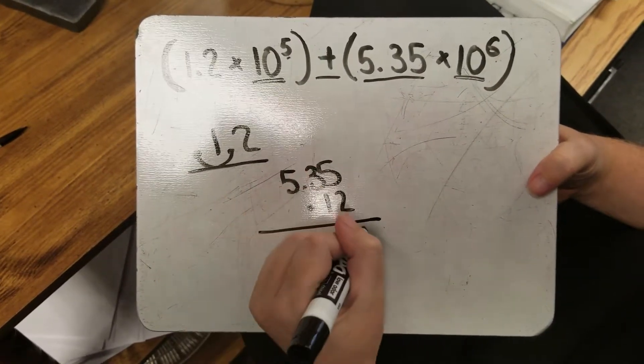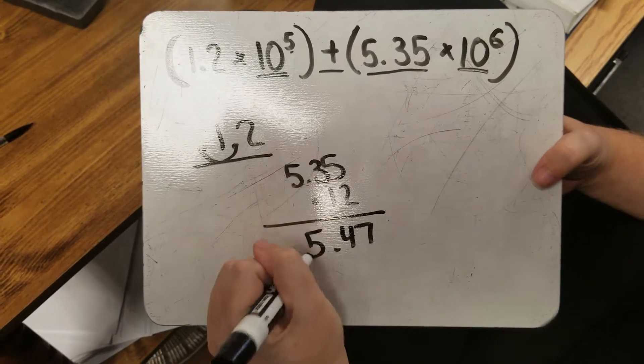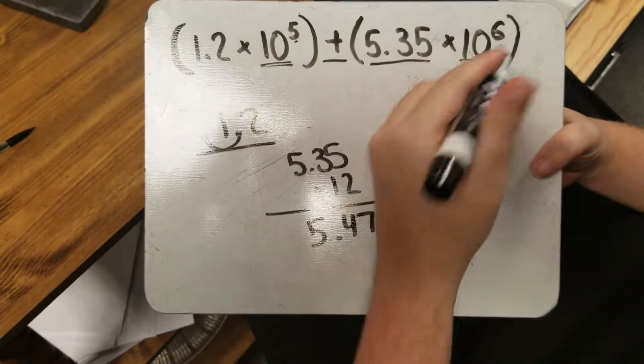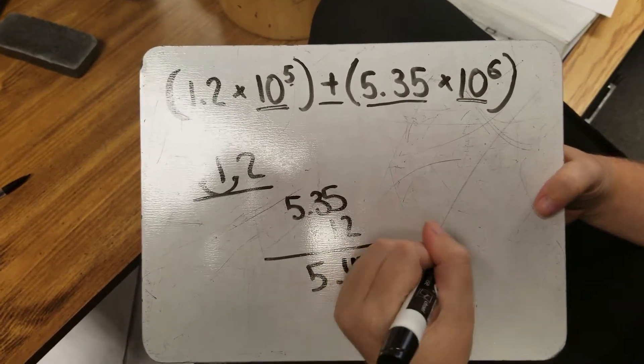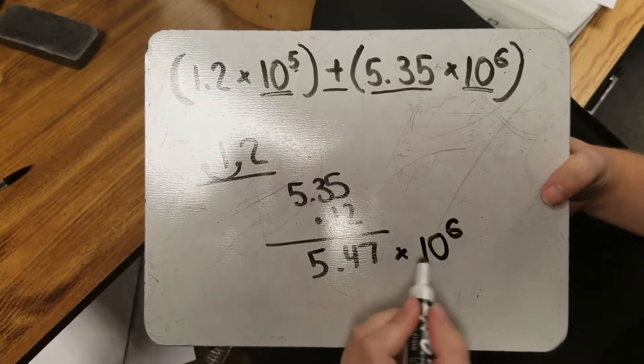So 5 plus 2 is 7, 3 plus 1 is 4.5. I now have the same exponent, so I'm simply bringing that down. 4.75 times 10 to the 6.